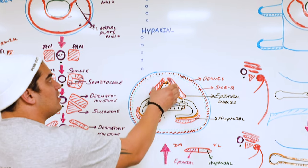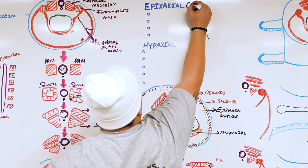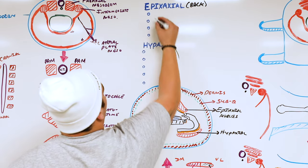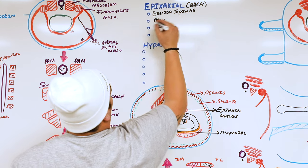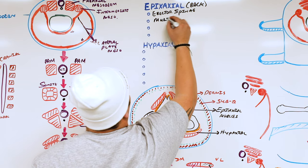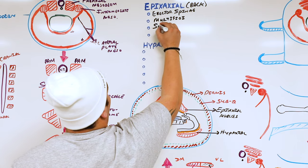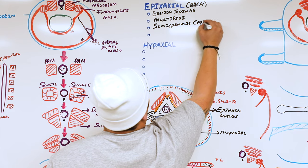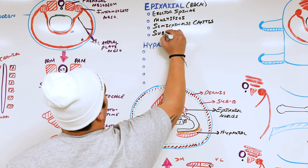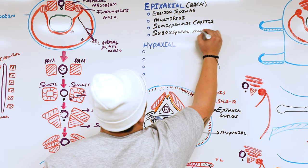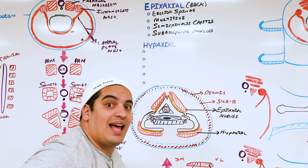The epiaxial muscles, formed by the dorsal medial portion of the myotome, are the back muscles. These include the erector spinae, the deep spinal muscles called the multifidi, the rotatores, and toward the top the semispinalis and spinalis capitis. You even have the suboccipital muscles — the rectus and obliquus muscles. These surround the vertebrae all the way from the base of the skull down to the pelvic girdle.